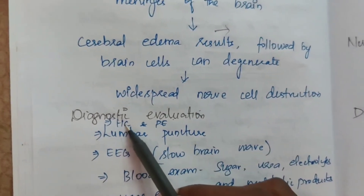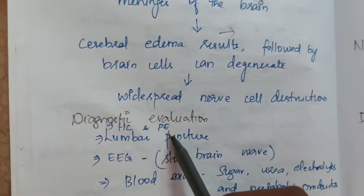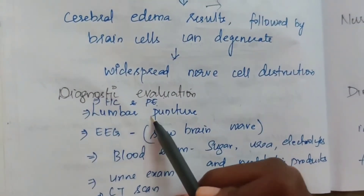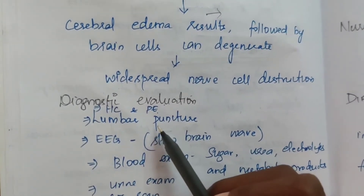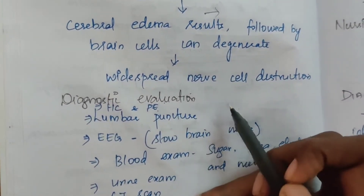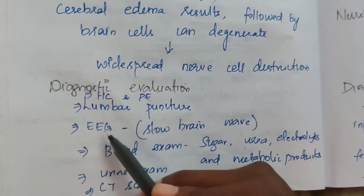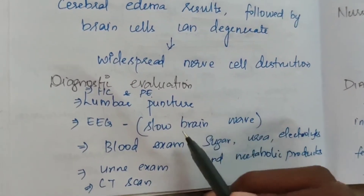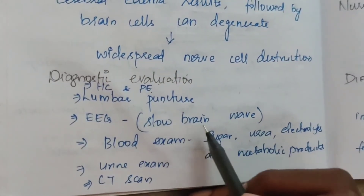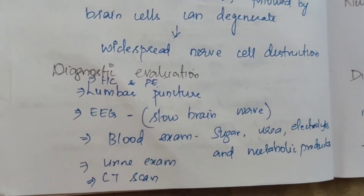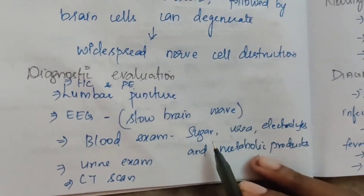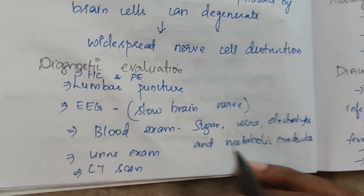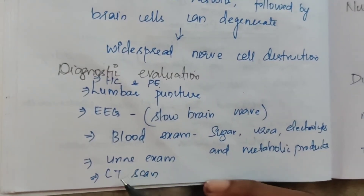Diagnostic evaluation begins with history collection and physical examination of signs and symptoms. Lumbar puncture is performed to collect CSF fluid. An EEG (electroencephalogram) shows slow brain waves. Blood examination checks sugar level, urea level, electrolytes, and metabolic products. Urine examination and CT brain scan are also performed.